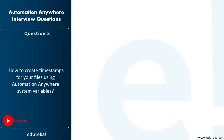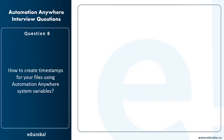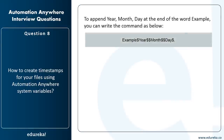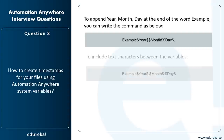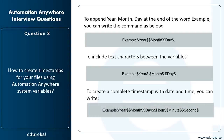How do you create timestamps for files using Automation Anywhere system variables? System variables under the date and time field include Year, Month, Day, Minutes, Second, and Date. You can combine these to create a timestamp. For example, to append year, month, and date to the word 'example': write example$Year$$Month$$Day$. To include text characters like colons between variables: example$Year$:$Month$:$Day$. For a complete timestamp with date and time: example$Year$$Month$$Day$$Hours$$Minutes$$Seconds$. To configure the date variable format, go to Tools > Variable Manager > System Variable > Date.